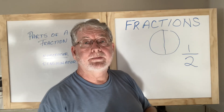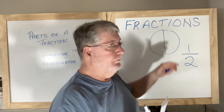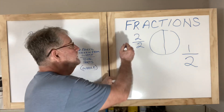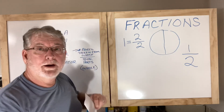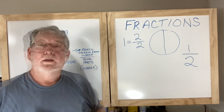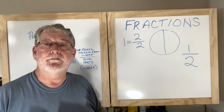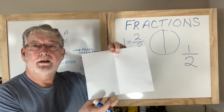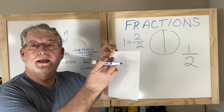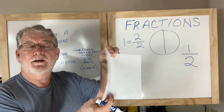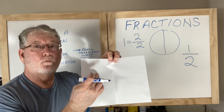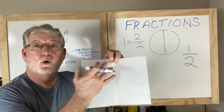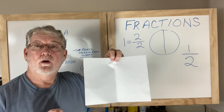Another way you could write this fraction: if I have both halves, I could write this as two over two, and that equals one. One being the whole circle. So if the numerator is how many parts are taken from the denominator, and I take half away, that's one half. But if I have both halves — one half here and one half here — that equals two halves, or the whole entire piece of paper, or one.